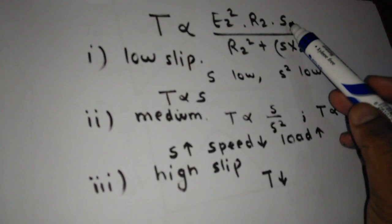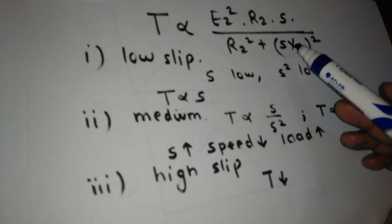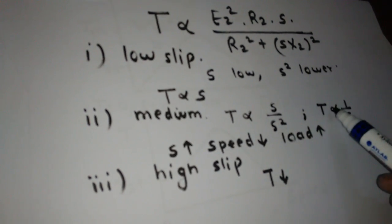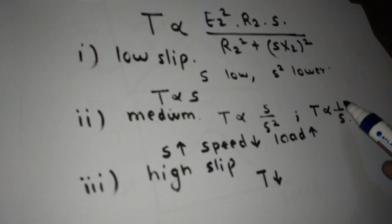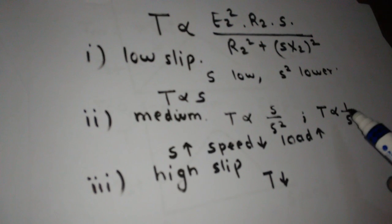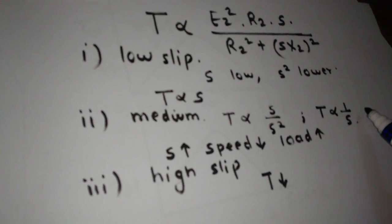The numerator is S, the denominator is S squared, so we can find the relationship is T is proportional to 1 upon S. So that is the characteristic of rectangular hyperbola.